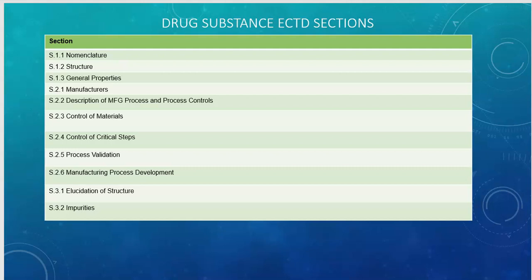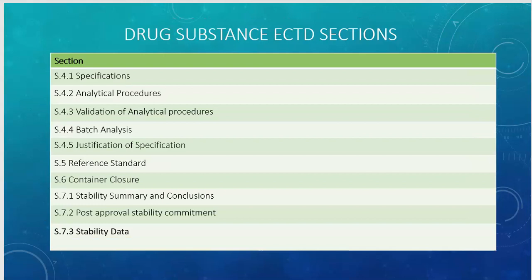Elucidation of structure covers all the experiments showing that once you make the drug, your final product is of the expected structure. Impurities is one of the most important sections — you have to prove that impurities are well below ICH limits and that your drug substance is pure enough to dose a patient.